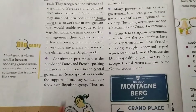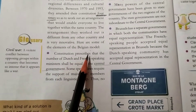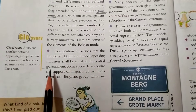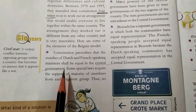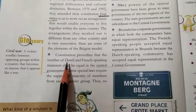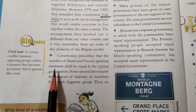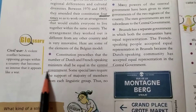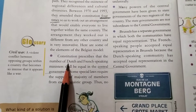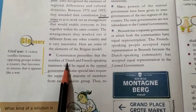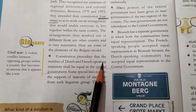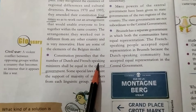The first point: the constitution prescribed that the number of Dutch and French speaking ministers shall be equal in the central government. For example, if the Dutch-speaking community has 20 members, then the French-speaking community will also have 20 members.